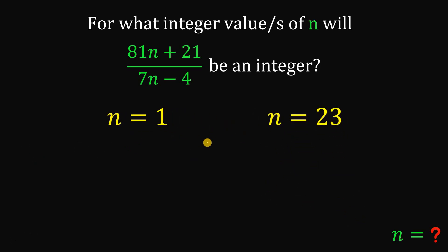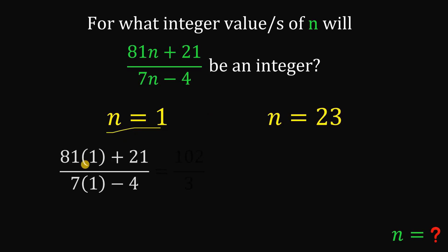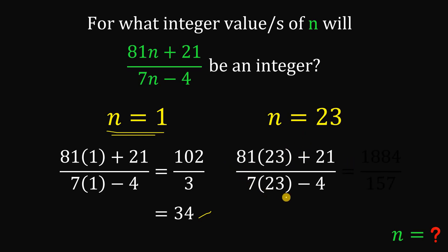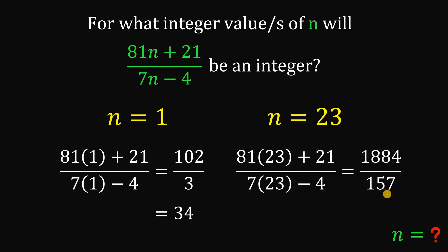Let's verify both values. For n = 1: (81×1 + 21) / (7×1 - 4) = 102 / 3 = 34, which is an integer — confirmed. For n = 23: (81×23 + 21) / (7×23 - 4) = 1884 / 157 = 12, and 12 is an integer — confirmed.